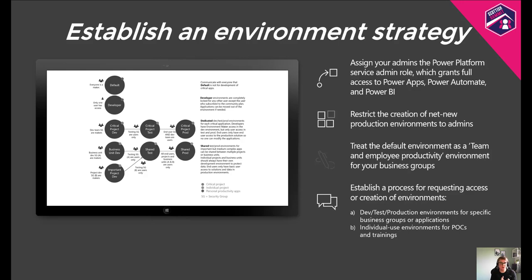The starting point of establishing an environment strategy is to assign your admins the Power Platform Service admin role — this grants access to fully manage Power Apps, Power Automate, and Power BI. This role should be granted to admins that don't need global tenant admin access and are dedicated to managing the Power Platform products. You then want to restrict the creation of net new production environments to admins — limiting environment creation is beneficial to maintain control, prevent unaccounted capacity consumption, and reduce the number of environments you need to manage. Treat the default environment as a team and employee productivity environment, and clearly communicate to your makers that it is not to be used for production scenarios.